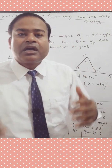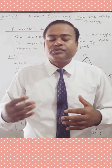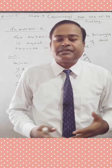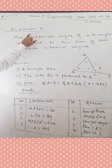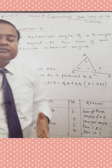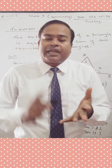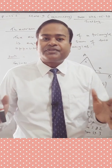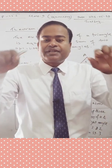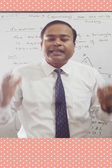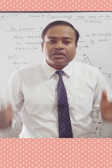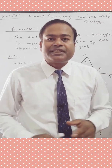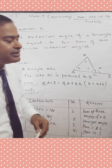Let us discuss how to prove Theorem 2 and what is the statement of Theorem 2. The statement of Theorem 2 is: the exterior angle of a triangle is equal to the sum of two opposite interior angles.